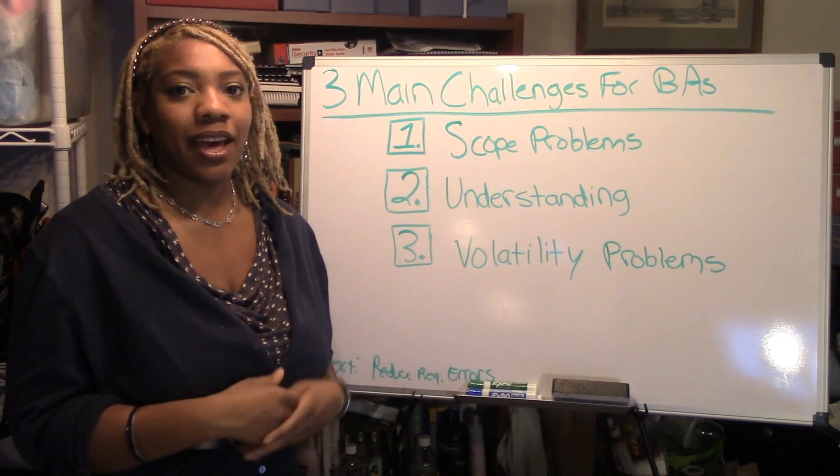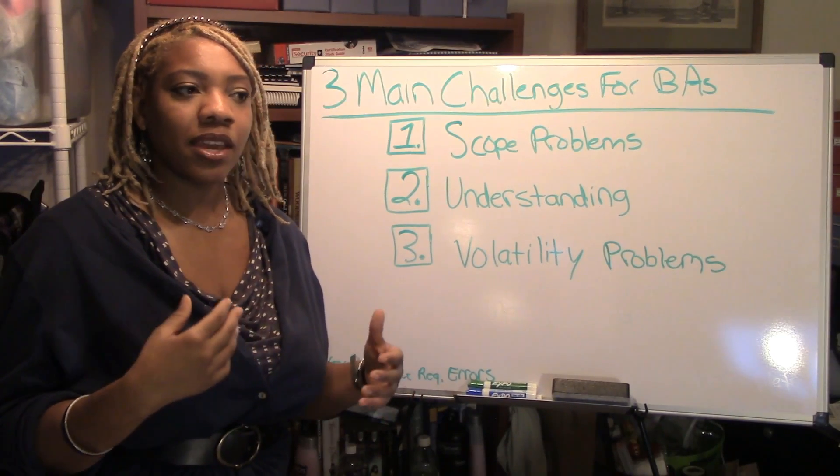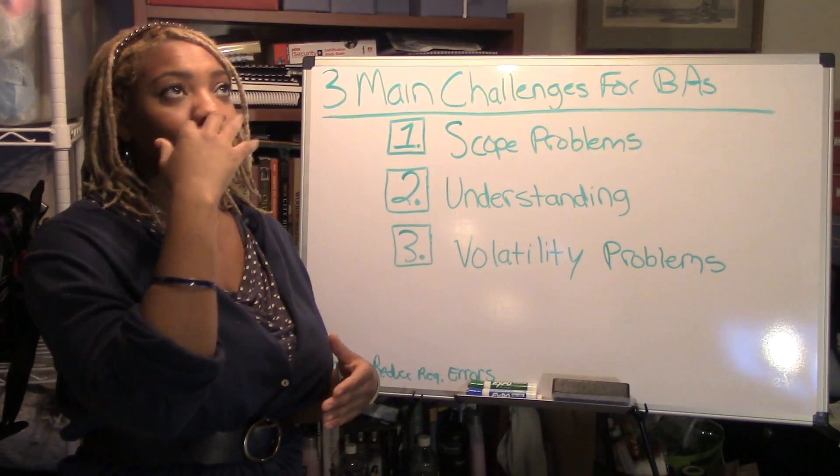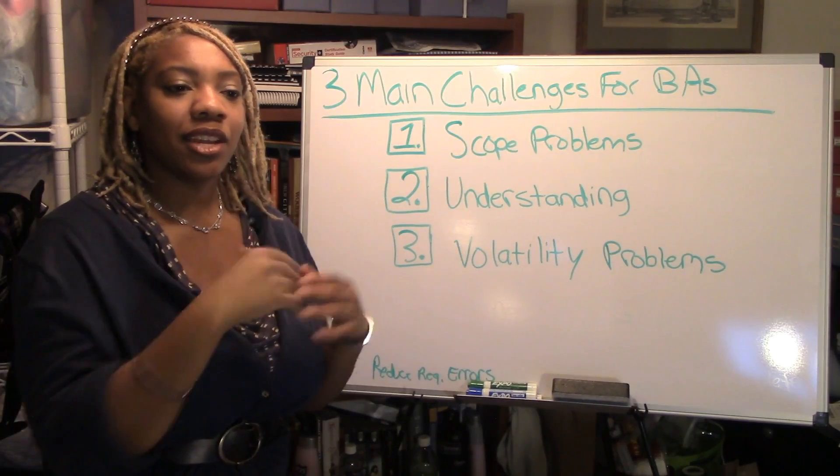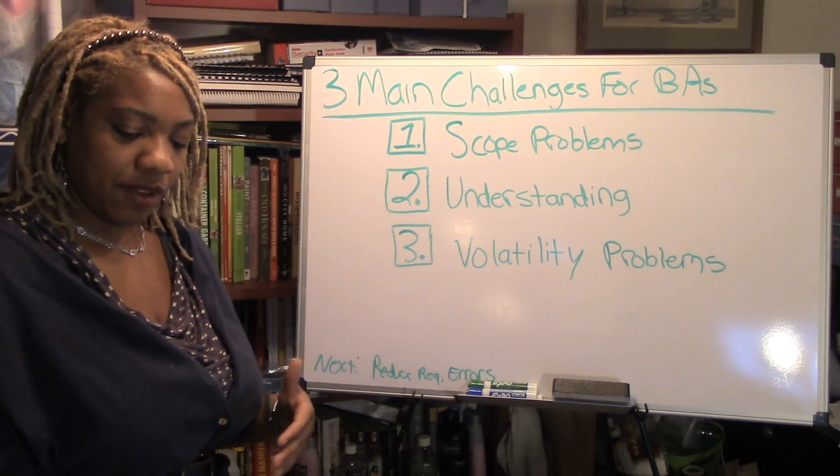And volatility problems. That is changing project stakeholders. It could also be like the requirements are changing. First, you said you wanted the first row of this line to look like this. Now you're saying you want to format it differently. And there's ways to control that vulnerability.